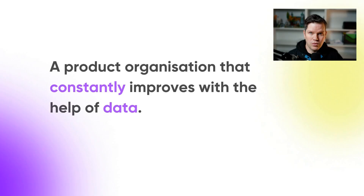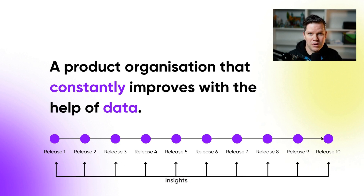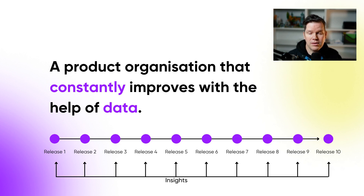Let's look at the situations where a tracking plan totally makes sense. One situation: you are a product organization that constantly improves their product based on data input. 'Constantly' is important — this means you don't release changes just two or three times a year. If you do, data doesn't really help you because data speeds up iteration and you're not really iterating. Also, you can run product development without any event data, so if you don't use it and don't plan to, you don't need a tracking plan.